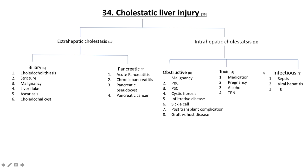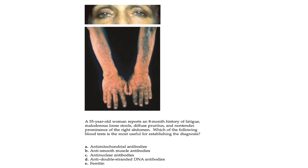A quick OSCE case: a 55-year-old woman reports an eight-month history of fatigue, malodorous loose stools, diffuse pruritus, and a non-tender prominence of the right abdomen. Which blood test is most useful for establishing the diagnosis — anti-mitochondrial antibodies, anti-smooth muscle antibodies, anti-nuclear antibodies, anti-double-stranded DNA antibodies, or ferritin? She is visibly jaundiced with pruritus. The answer is anti-mitochondrial antibodies, because we're looking at primary biliary cirrhosis — a chronic cholestatic liver disease affecting middle-aged women primarily.